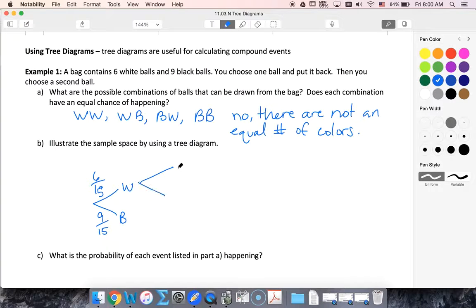I don't change the color or anything so I still get white or black for my second draw and based on this, picking white, I pick it and I put it back. So my odds of getting white are still six out of fifteen, black are still nine out of fifteen.